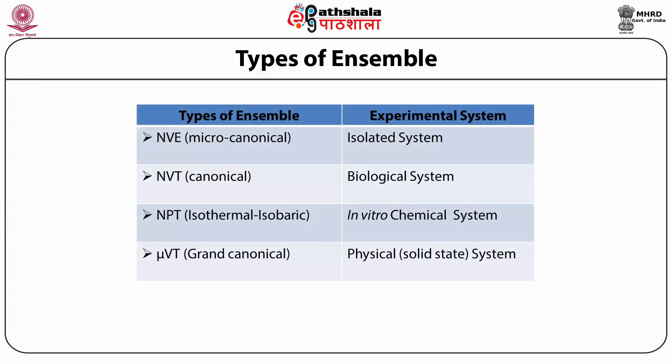There are four main types of ensembles: NVE (microcanonical), analogous to an isolated system; NVT (canonical), which matches biological systems; NPT (isothermal-isobaric), matching chemist experiments at atmospheric pressure and temperature; and grand canonical, mainly used for physical or solid-state systems.